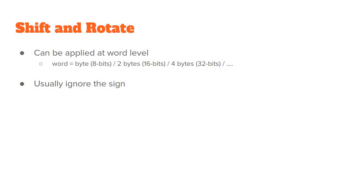I want to remind you that a word is either a byte — this is 8 bits — 2 bytes, that's 16 bits, 4 bytes, or even more bytes. In today's computers we speak about 64 bits and maybe even more. So that's a word. In the examples that we'll be covering today I'm going to use bytes, so words with 8 bits — 8 individual binary digits.